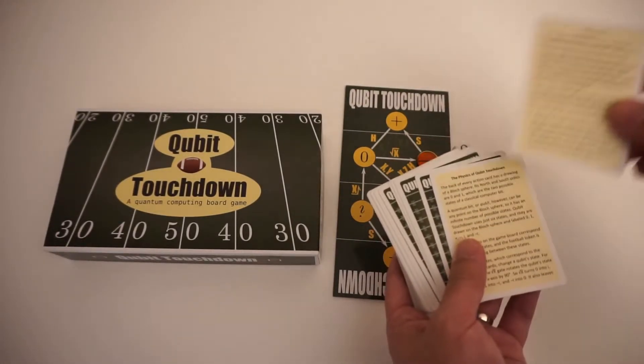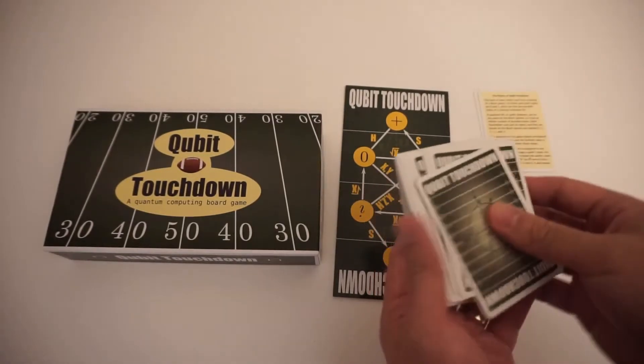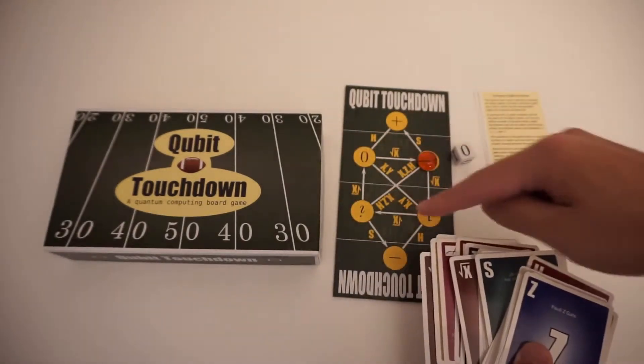So there's an instructional card on how to play the game, there's another card explaining the physics of Qubit Touchdown, and then the remaining cards are the action cards that you play to move the football around the field.